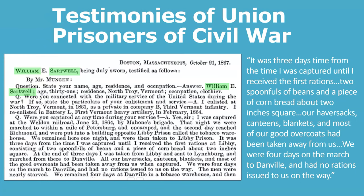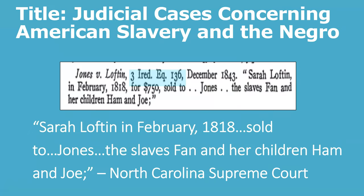A great find in this database was a collection of testimonies of Civil War Union prisoners. William Sartwell of North Troy, Vermont testified: 'It was three days from the time I was captured until I received the first rations. We had two spoons of beans and a piece of cornbread about two inches square. Our haversacks, canteens, blankets, and most of our good overcoats had been taken away from us. We were four days on the march to Danville and had no rations issued to us on the way.' HeinOnline also includes a free U.S. slavery collection. One of the titles is Judicial Cases Concerning American Slavery and the Negro — a December 1843 case in Iridale County, North Carolina lists the details that a slaveholder named Sarah Lofton sold a group of enslaved persons named Fan and her children Ham and Joe.